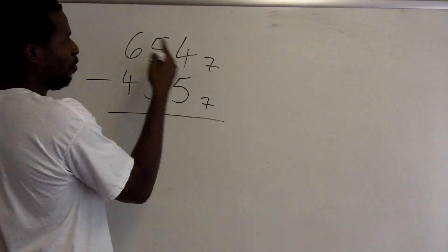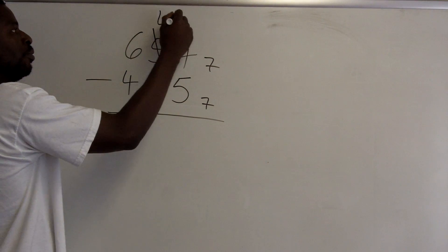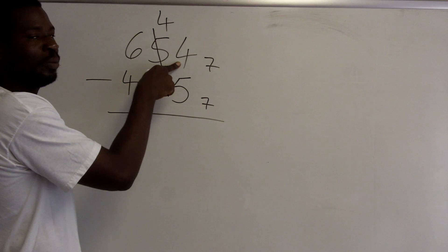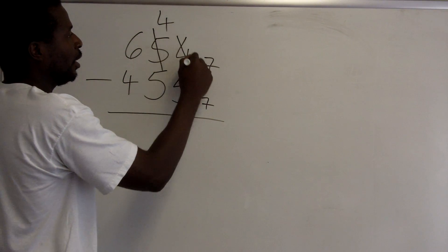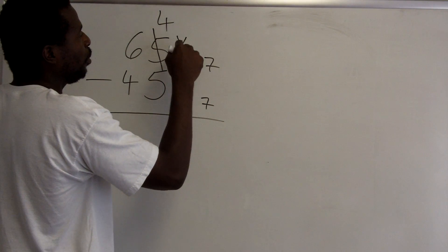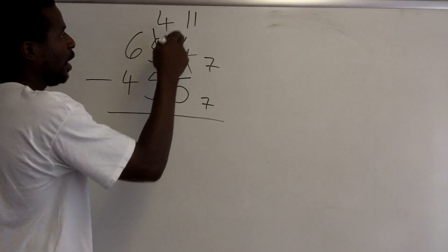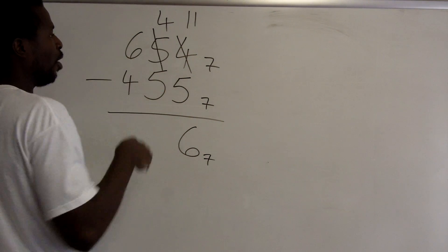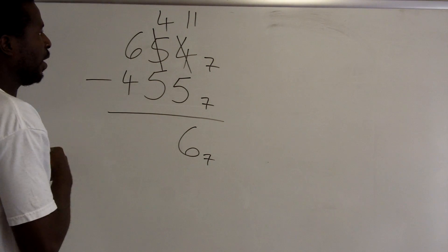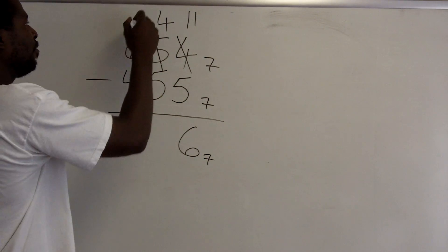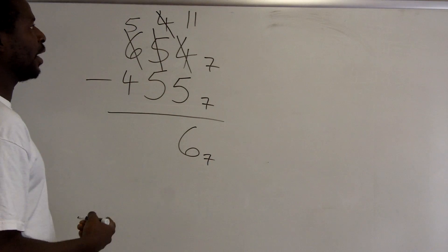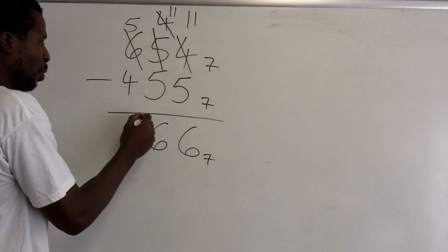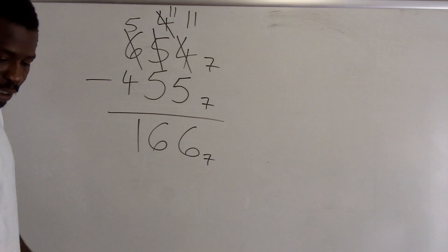I can't take 5 away from 4, so I have to borrow. I borrow 1 from the 5, which becomes a 4. I'm not turning this into a 14 — I add 10 base 7, which is 7, so 7 plus 4 is 11. 11 minus 5 is 6. Moving to the next column, I can't subtract 5 from 4, so I borrow again. This becomes a 5, and I add 7 to the 4 to get 11. 11 minus 5 is again 6. Then 5 minus 4 is 1. The answer is 166 base 7.